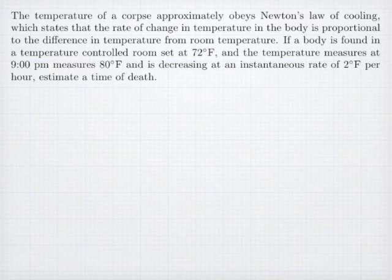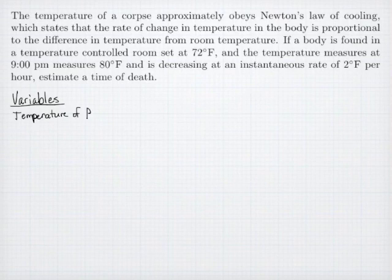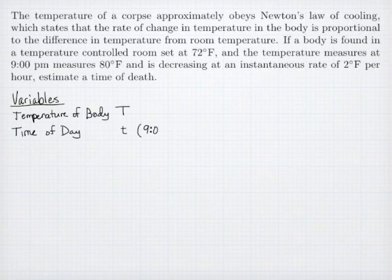We start by identifying our variables. We're interested in the temperature of the body, and its temperature is a function of time. So let's list time, time of day. Now, if I measure temperature with the variable T and time with lower case t, I still need to identify how I measure time. So I'm going to measure time as though 9 o'clock pm corresponds to t equals 9. So t equals 0 would be noon, and negative times would be in the morning unless it was more than negative 12. But that's how I'll measure time.